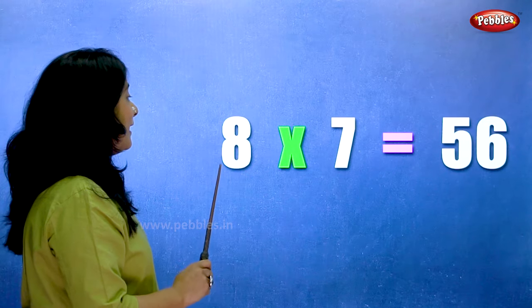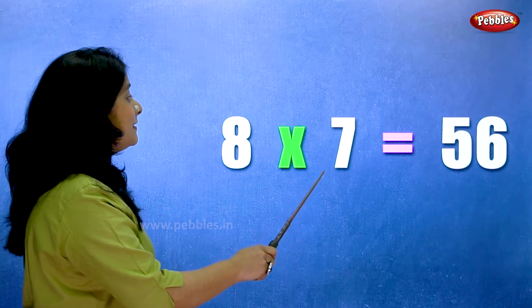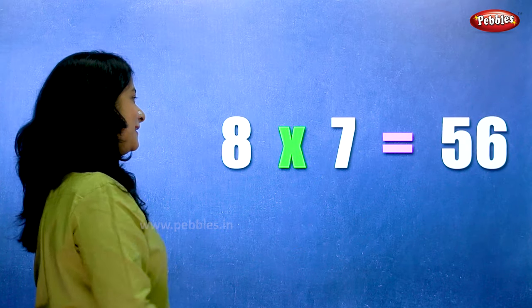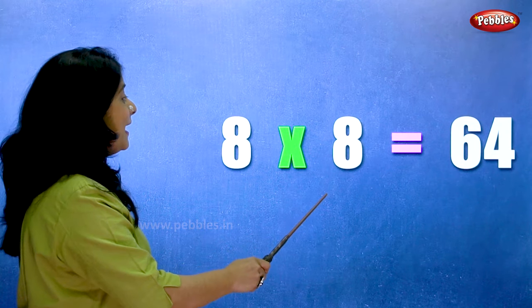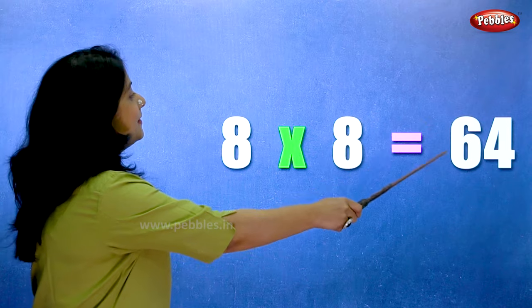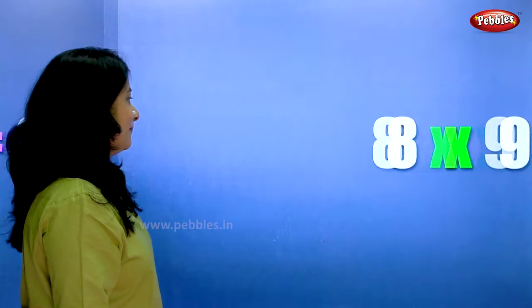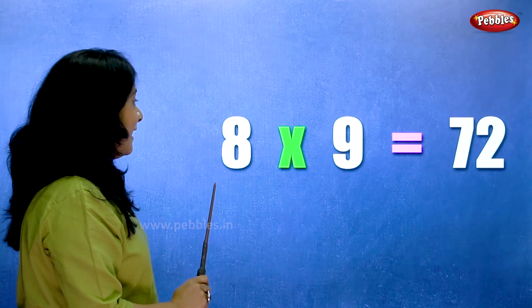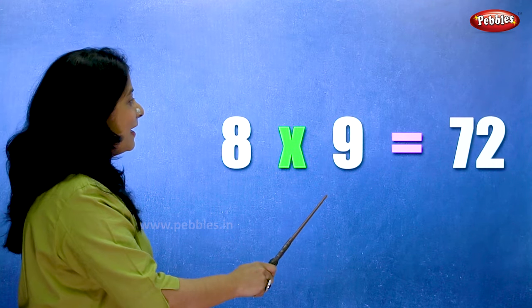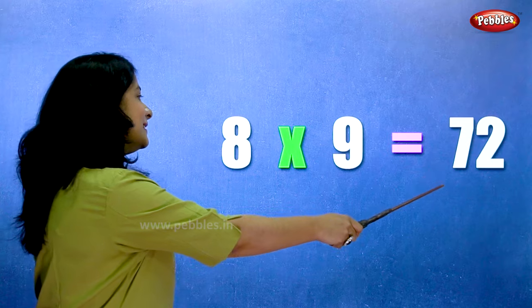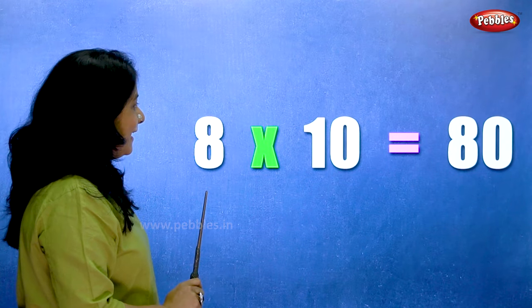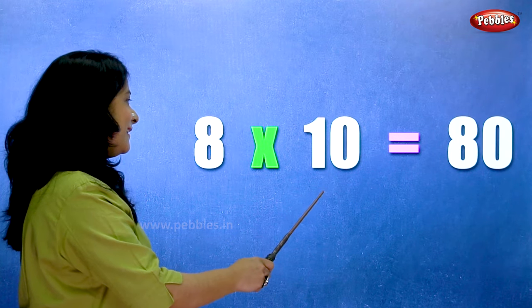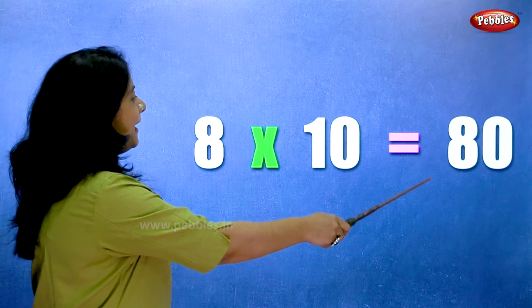8 7s are 56. 8 8s are 64. 8 9s are 72. 8 10s are 80.